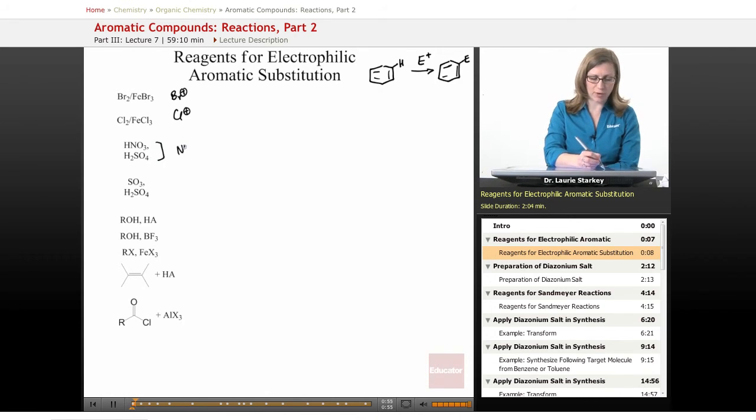HNO3H2SO4 combined to form NO2 plus, we could do a nitration. SO3H2SO4 is a way of adding a sulfonyl group, an SO3H group, a sulfonic group.